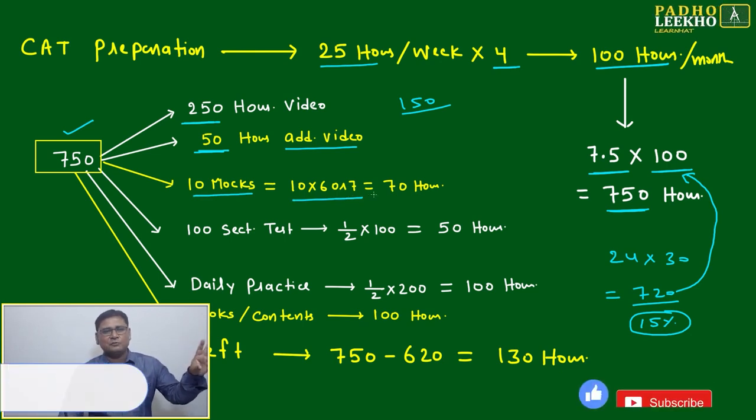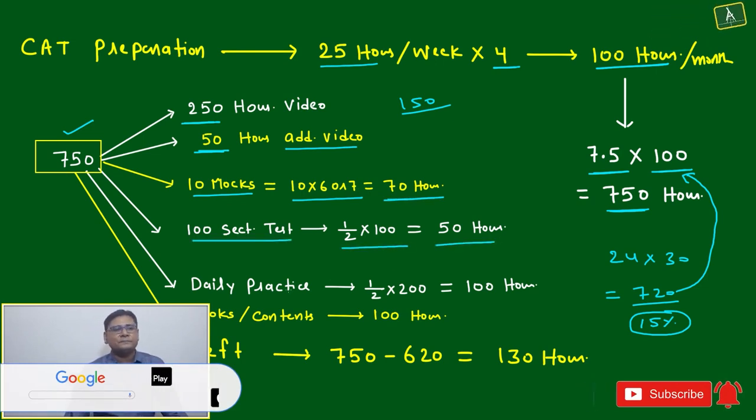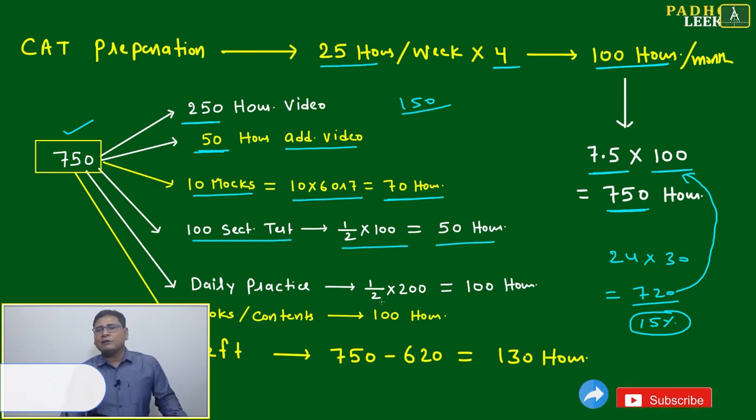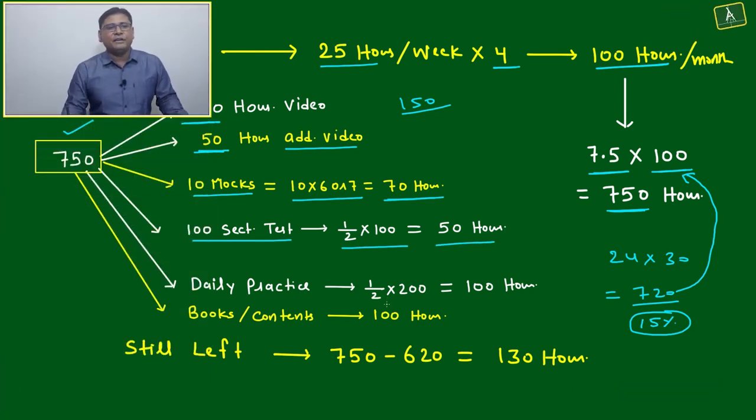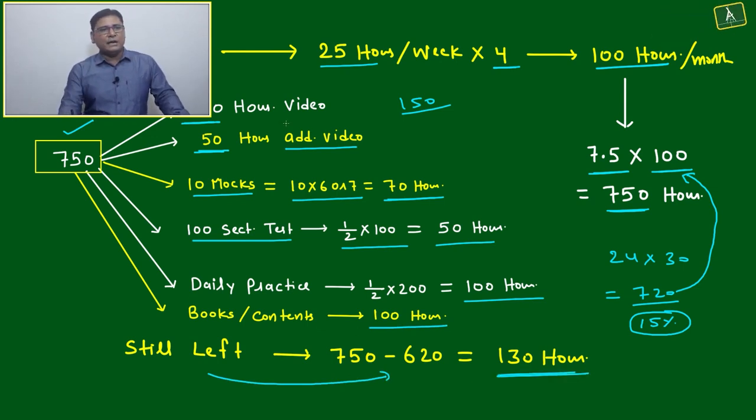Three hours per mock, three hours for analysis - take seven hours total. That's 70 hours. 100 sectional tests, half an hour per sectional test equals 50 hours. Daily practice - whatever I send in PDF form - half an hour for 200 days approximately equals 100 hours. Other books, content, or reading you're doing - 100 hours. Another 100 hours. Still you have 130 hours out of 750. Add 250 plus 50 plus 70 plus 50 plus 100 plus 100 - that's 620. 750 minus 620 leaves 130 hours.